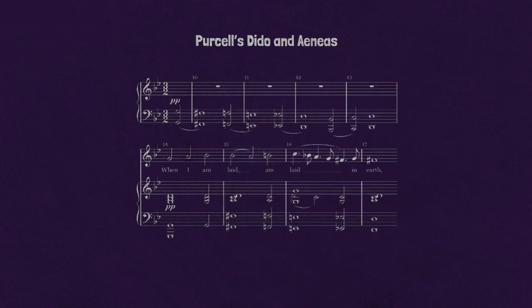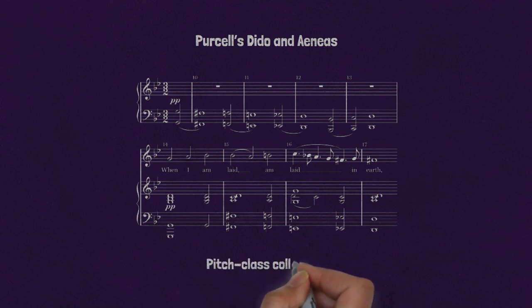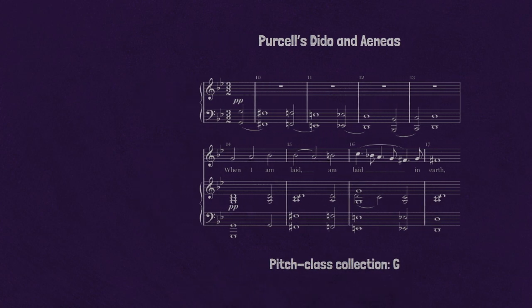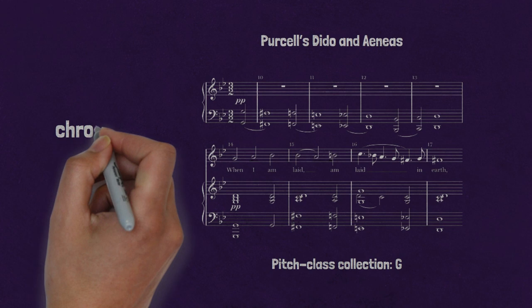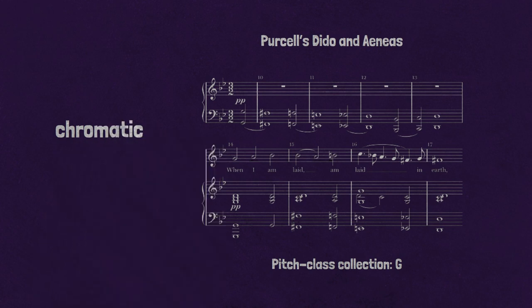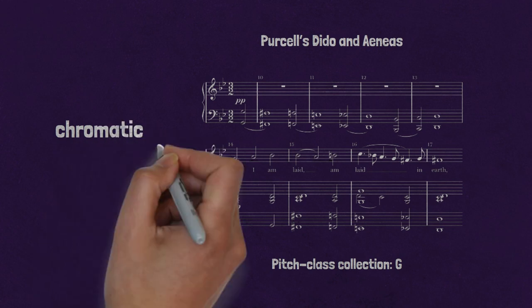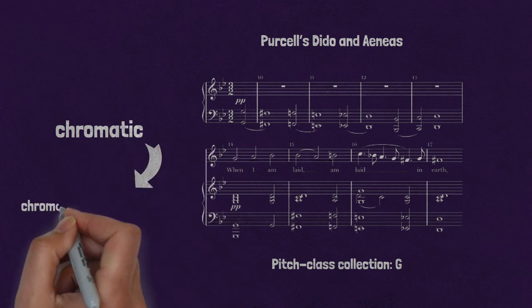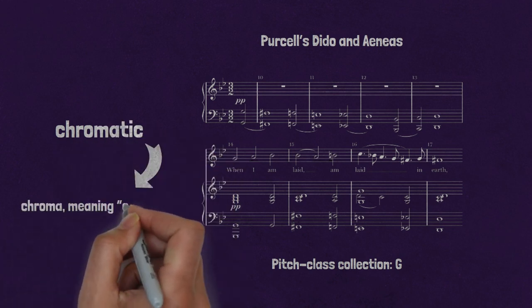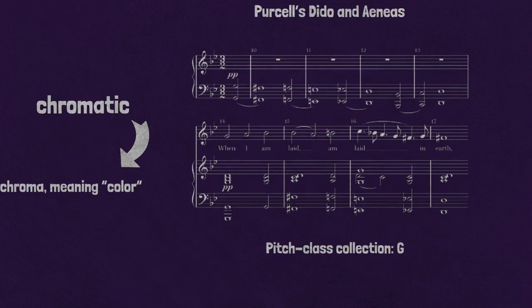The Purcell passage includes 10 of the 12 possible pitch classes — two more and it would constitute a complete chromatic collection. The word 'chromatic' comes from the Greek chroma, meaning 'color.' Chromatic collections contain one of each possible pitch class.